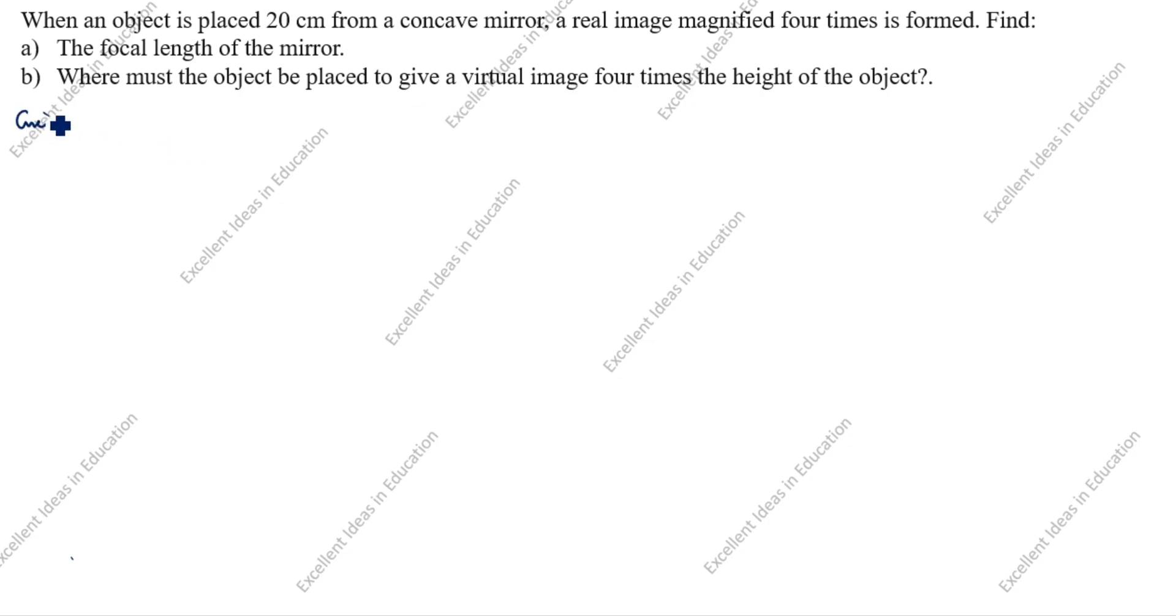What is given in this question? When an object is placed 20 centimeter from a concave mirror, so object means u is always negative for lens and mirror, so u equals minus 20 centimeter. Next, real image is always negative, virtual image is always positive. So magnified four times means magnification m is equal to minus 4.